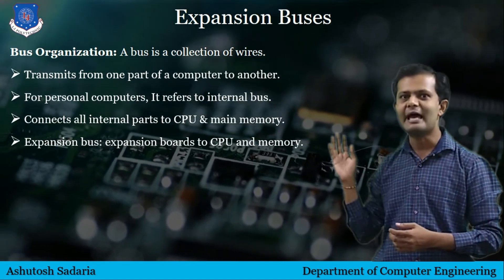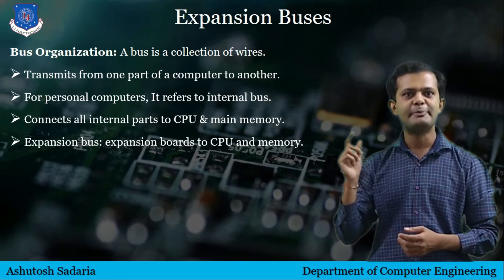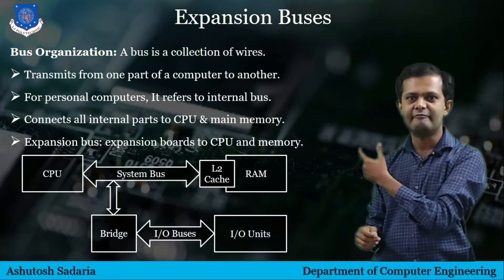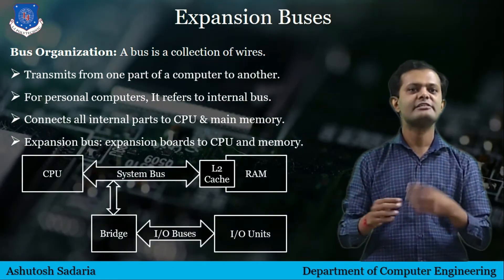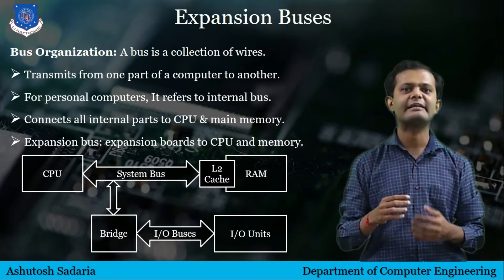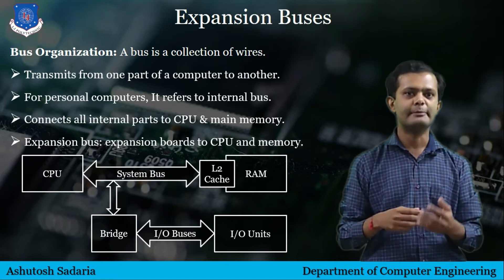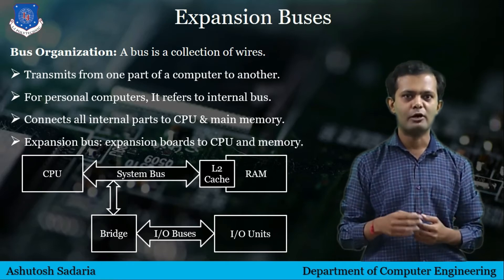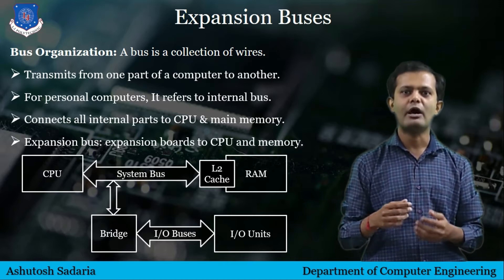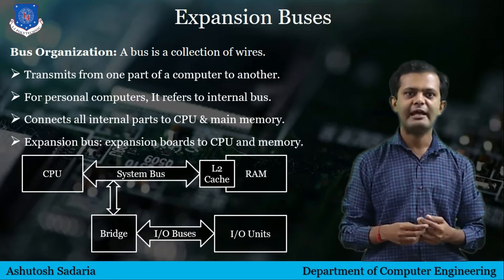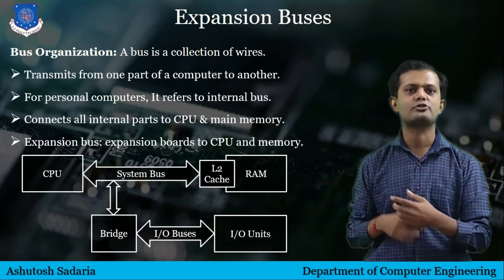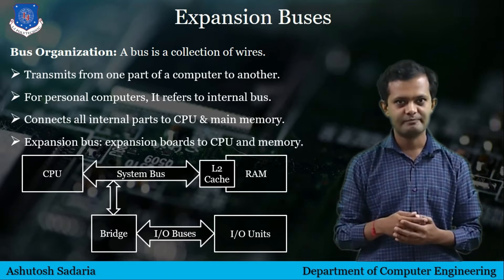As you can see from the diagram, the CPU is connected to the cache and RAM using the system bus, while other external I/O units like drives, keyboard, mouse, ports, and adapters are connected through I/O buses. The I/O buses are connected to the system bus through a bridge.